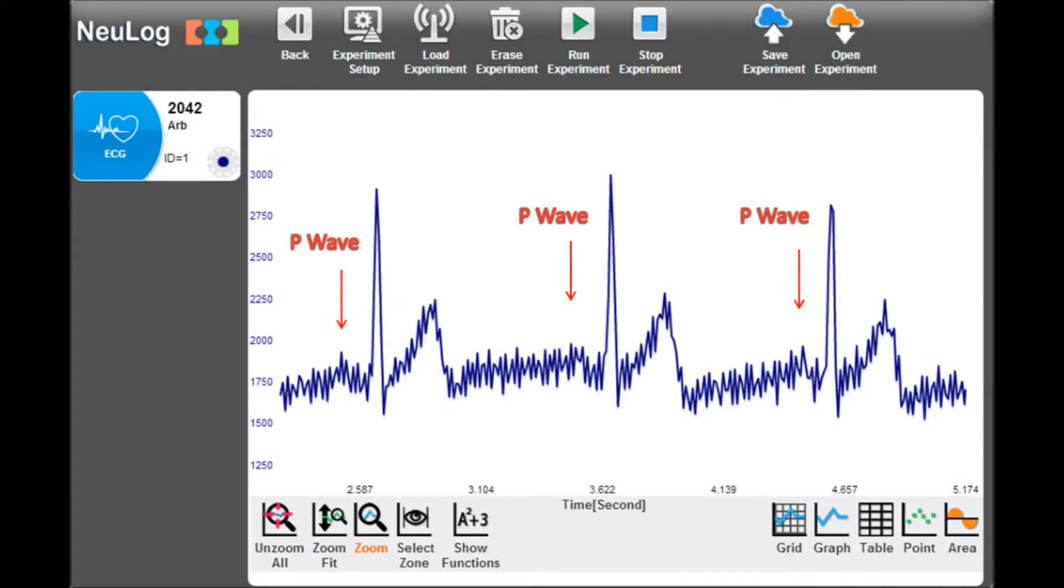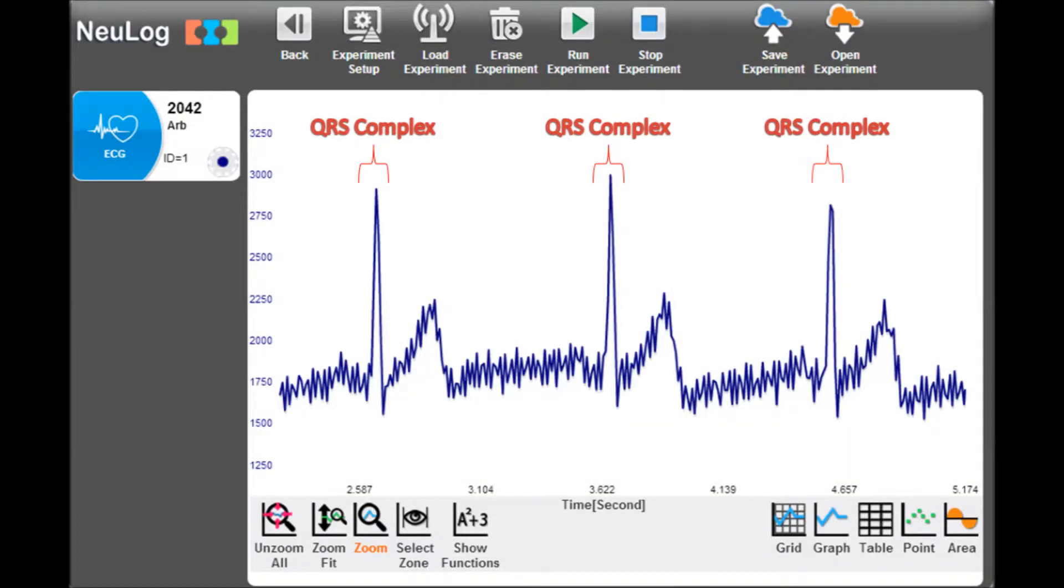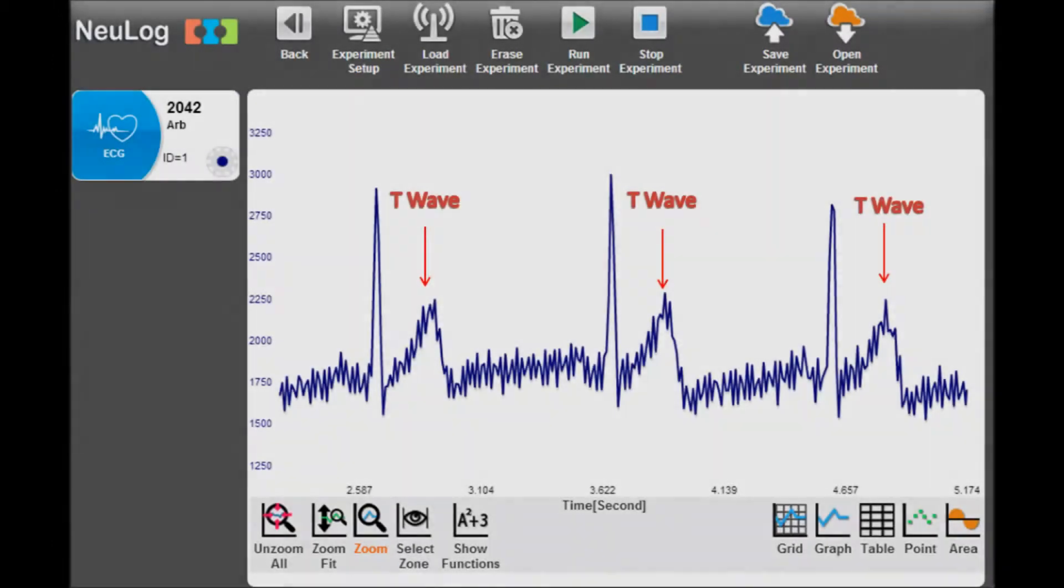The P wave where atrial depolarization occurs, the QRS complex where depolarization of both the right and left ventricles occur, and the T wave is the depolarization of the ventricles.